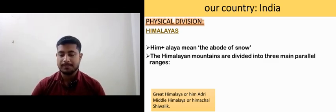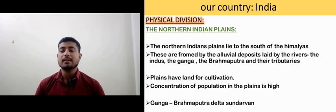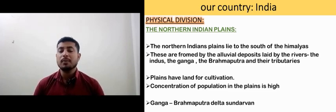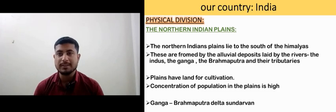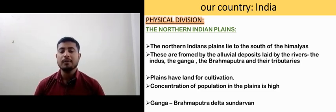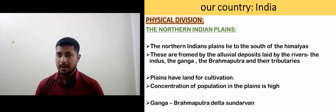Now there are the Northern Indian Plains. The North Indian Plains lie to the south of the Himalayas. These are formed by alluvial deposits laid by the rivers — the Indus, the Ganga, the Brahmaputra, and their tributaries. These plains have land for cultivation, and the concentration of population is very high. The Ganga-Brahmaputra Delta is also known as the Sundarbans.